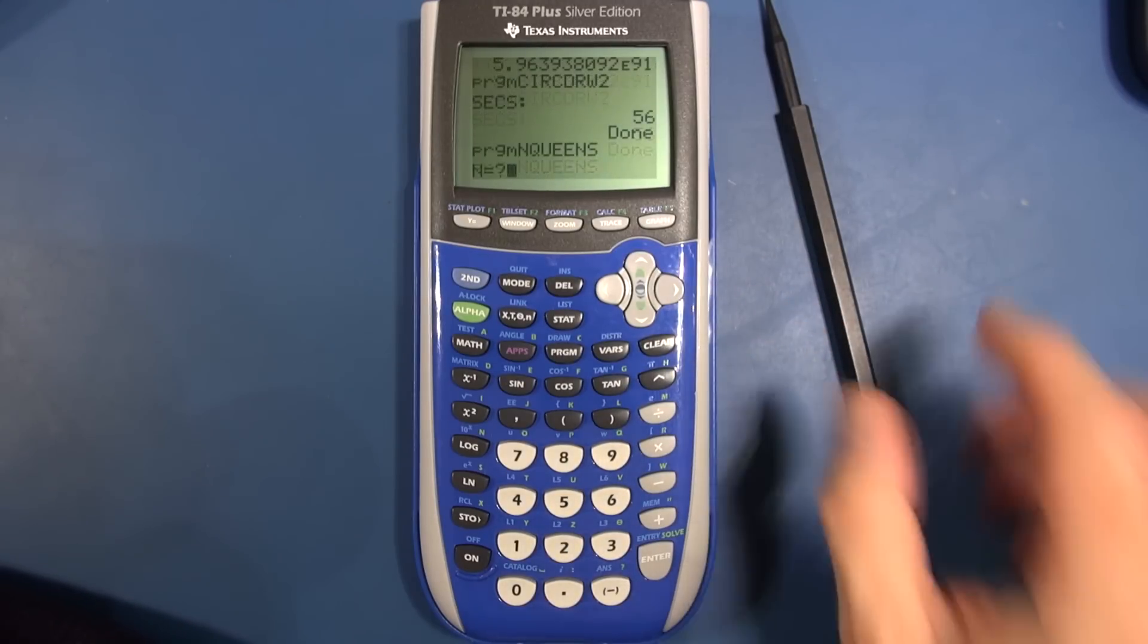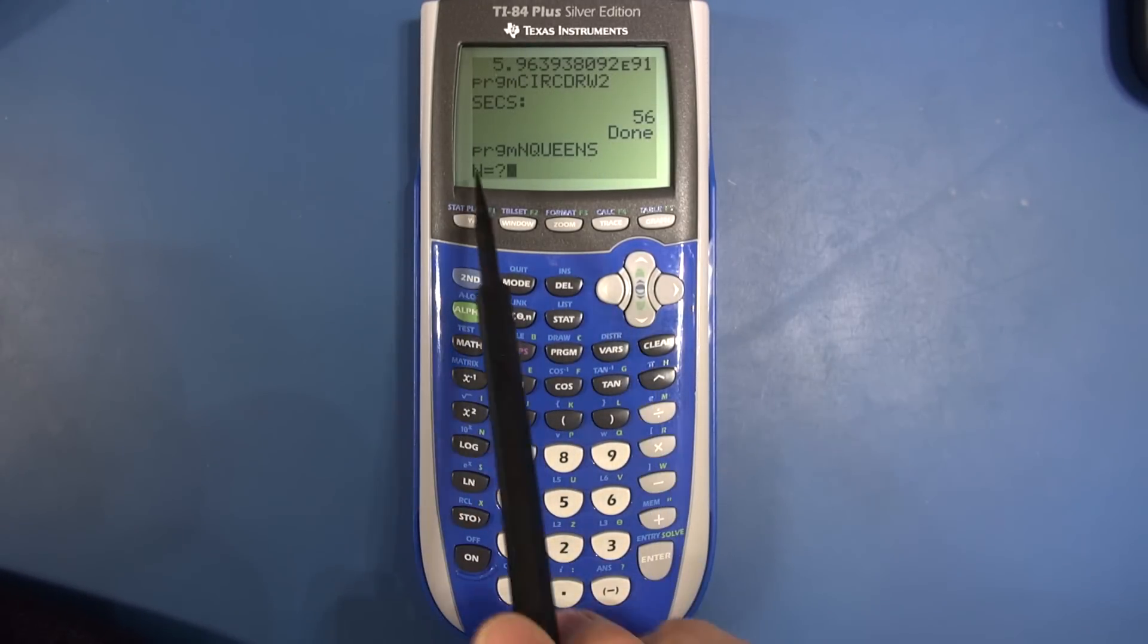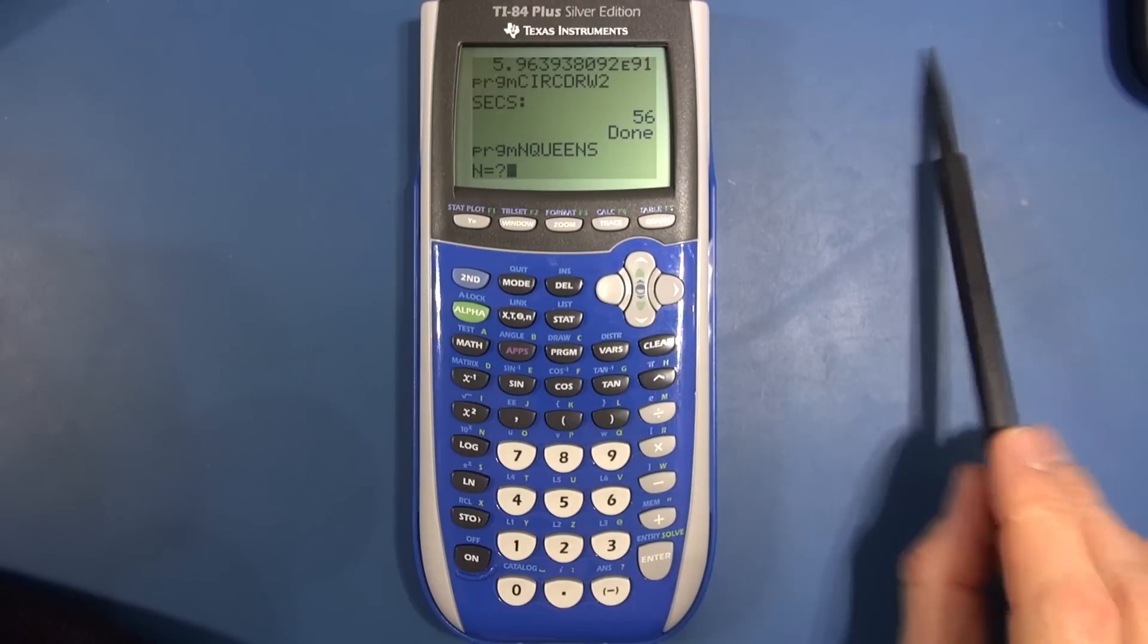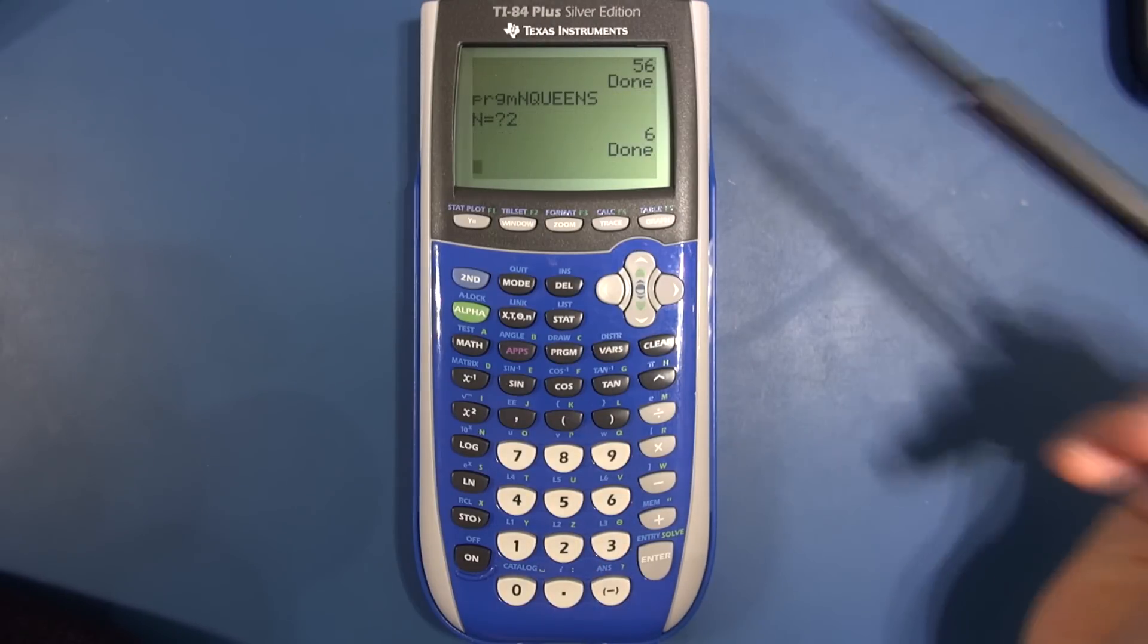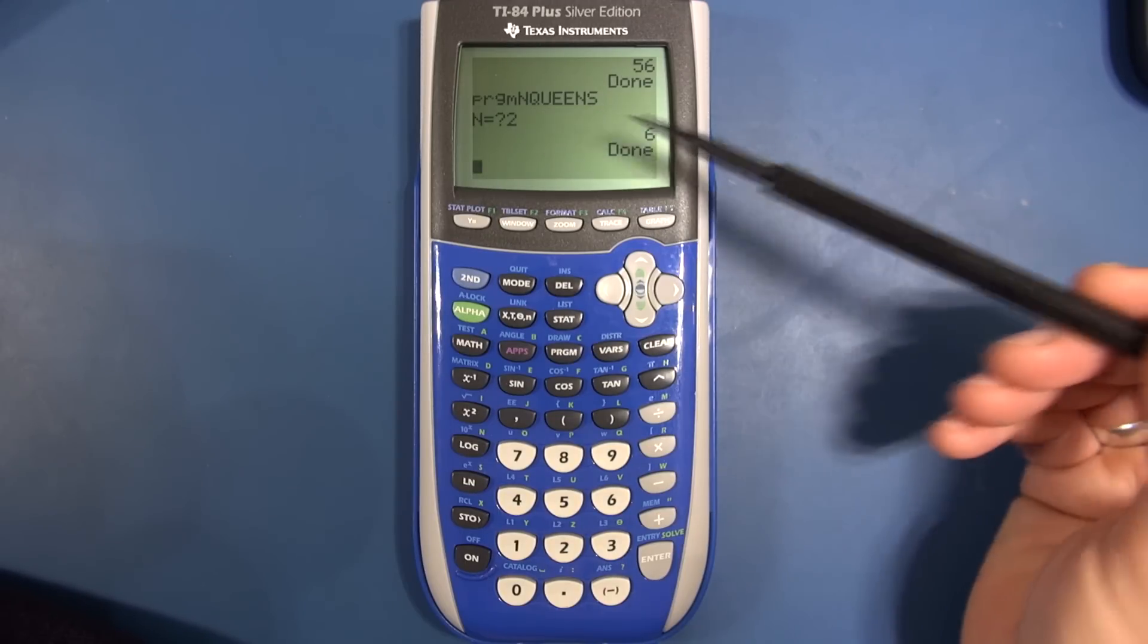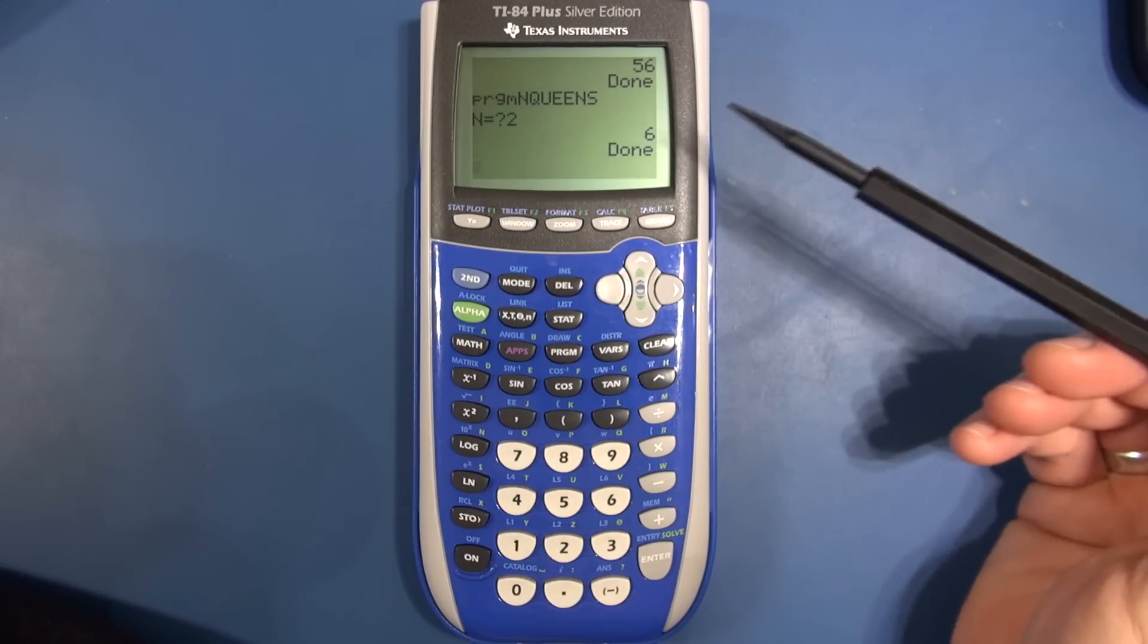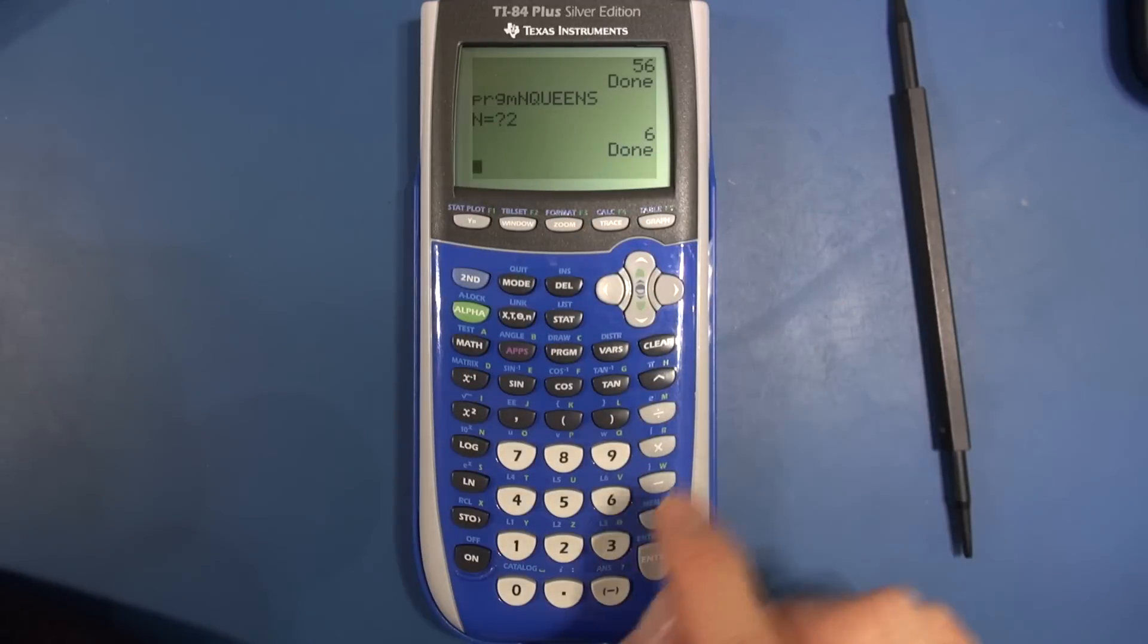We execute it. The first thing it asks me is N. So N is the size of the chess board. So I'll start off let's say two by two. I only need to enter the two for the two by two chess board. Enter and bang. It's come up and said there are six permutations that you can have for that problem. So that come up fairly quickly. I haven't added the time to this yet because I've still got a bug. I'll just demonstrate that.